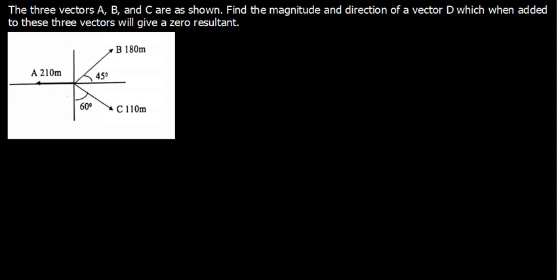In this video, we are going to solve a very interesting question under vectors. The question says: three vectors A, B, and C are shown. Find the magnitude and the direction of a vector D which, when added to these three vectors, will give a zero resultant.